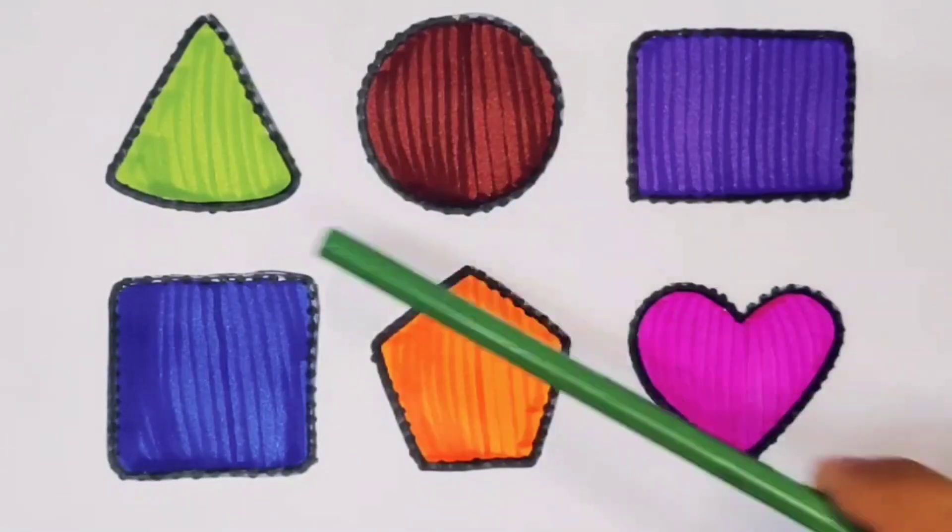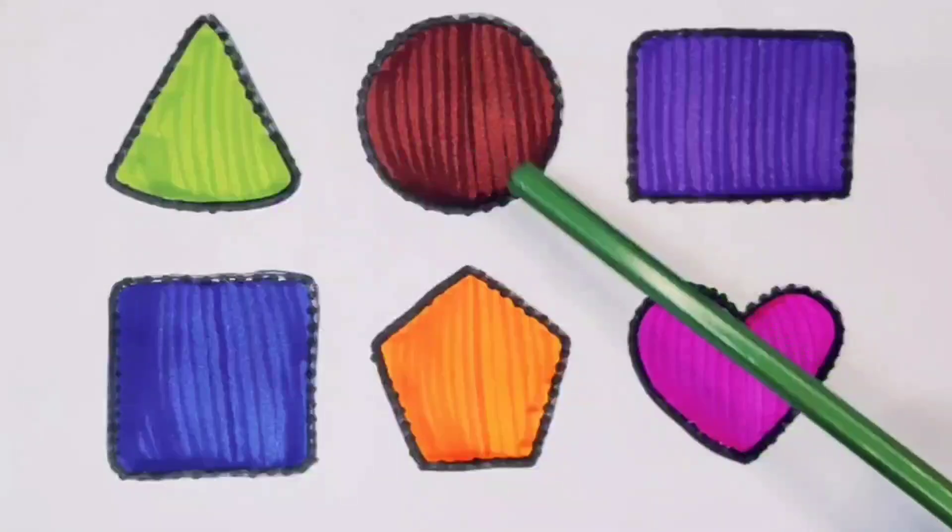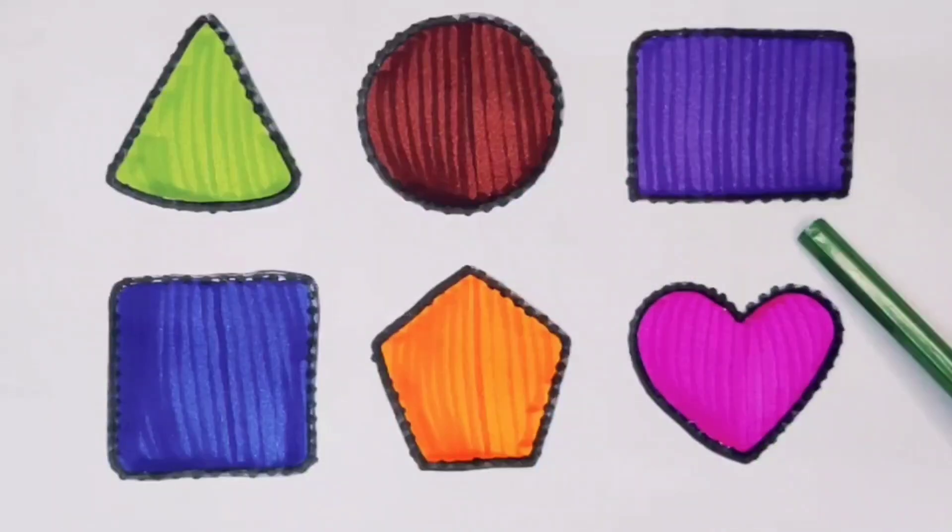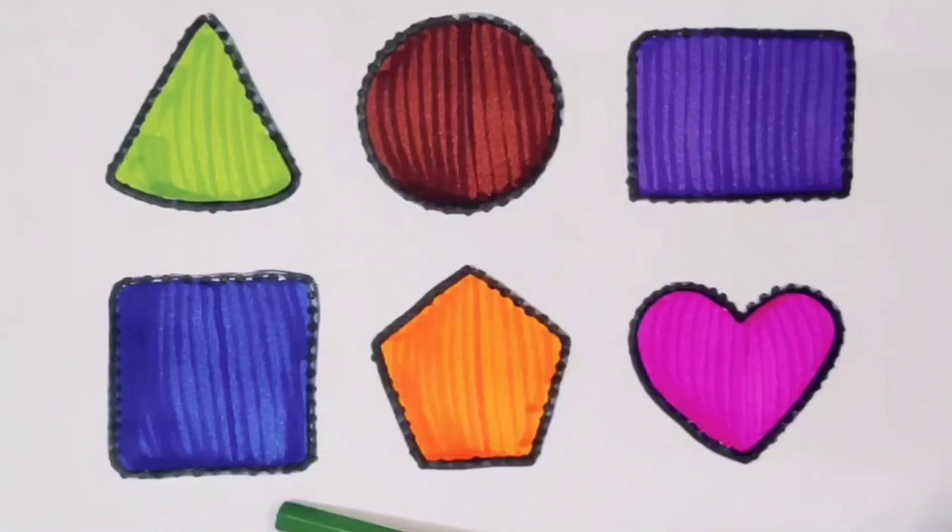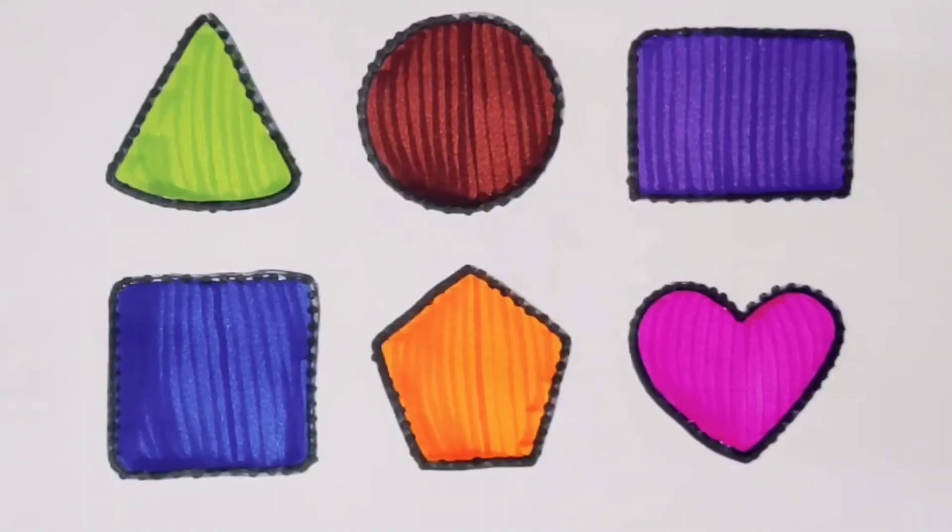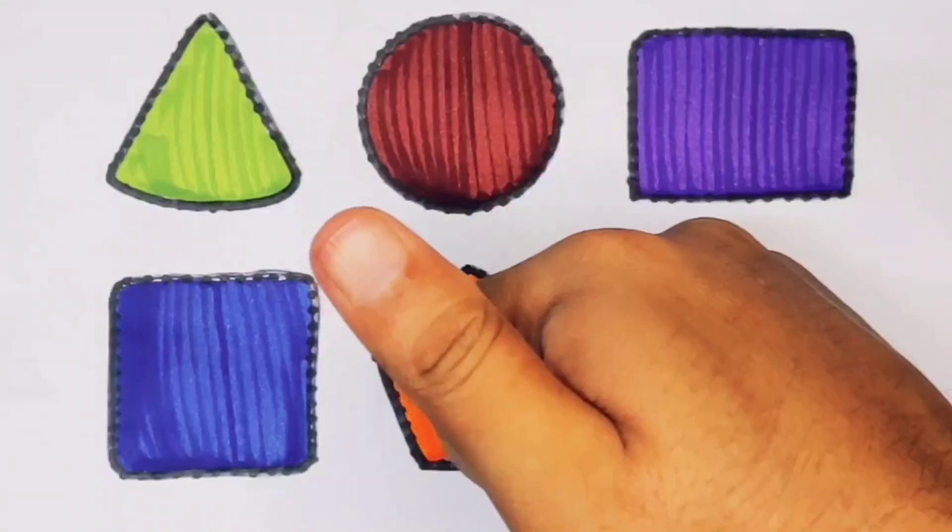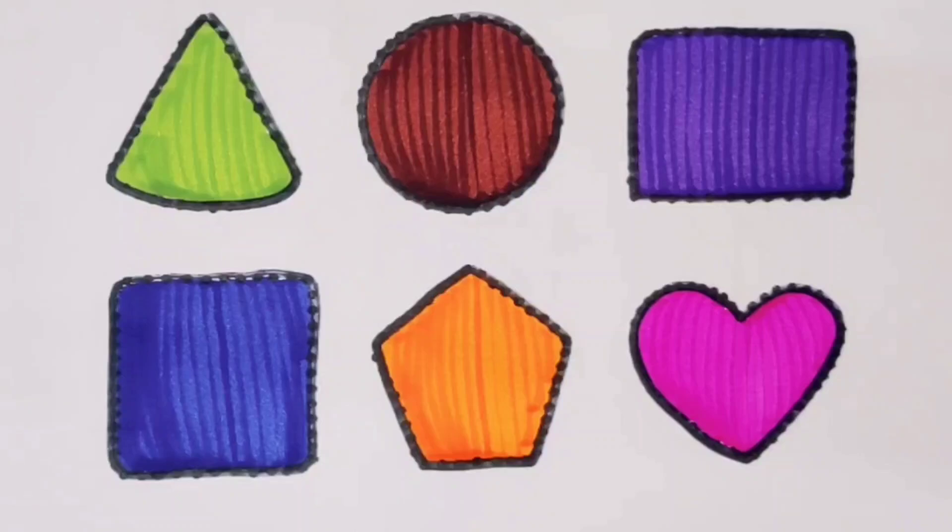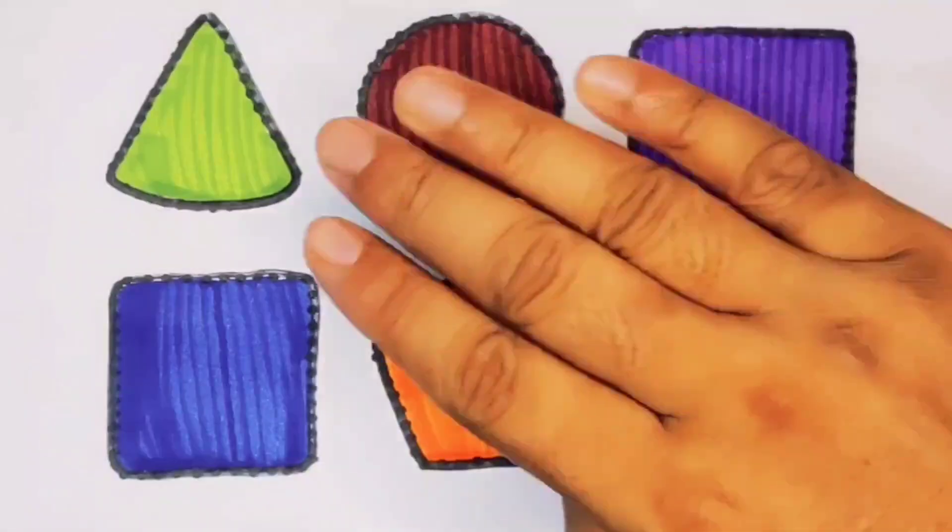What we learned: green color triangle, chocolate color circle, purple color rectangle, blue color square, orange color pentagon, pink color heart. Thank you for watching my video. If you liked it, please subscribe. Bye bye!